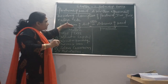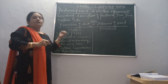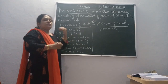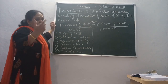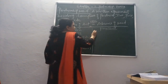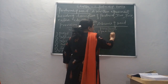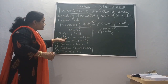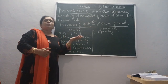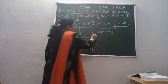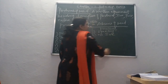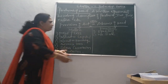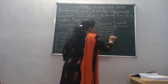If the deed is silent on profit or loss sharing, all partners will share profits and losses equally, irrespective of the capital contributed by them. If the deed is silent on interest on capital, no interest on capital will be provided to any partner. Similarly, if it is silent on interest on drawings, no interest on drawings will be charged from any partner.